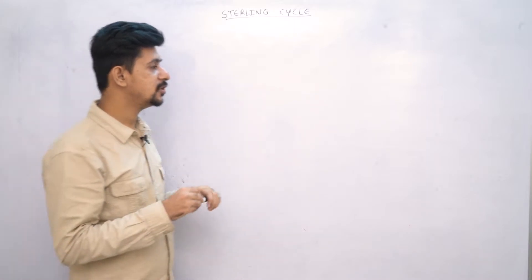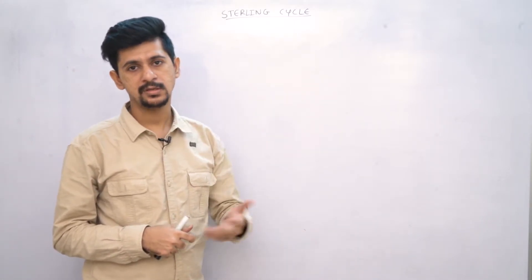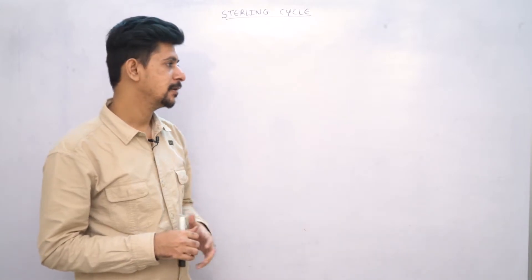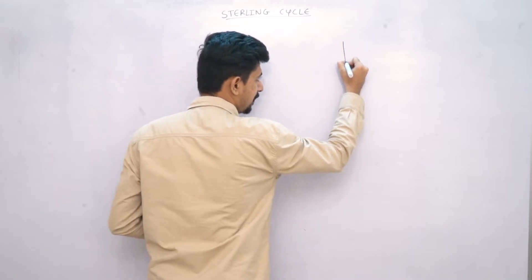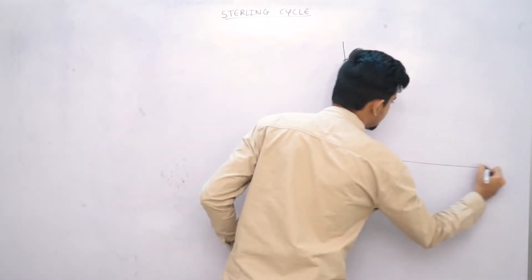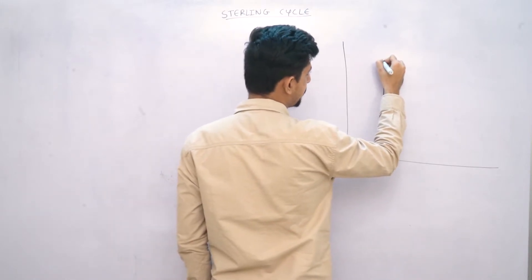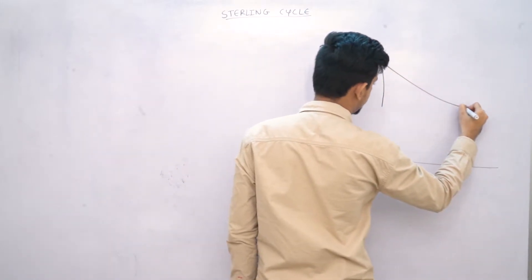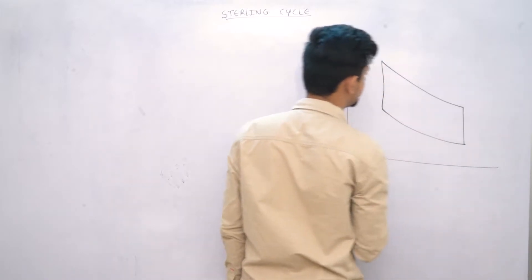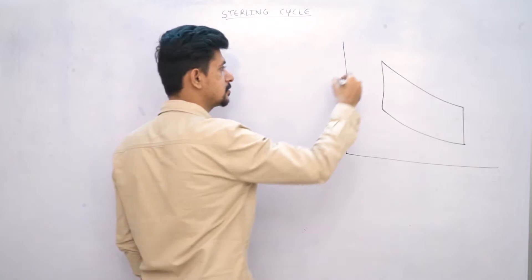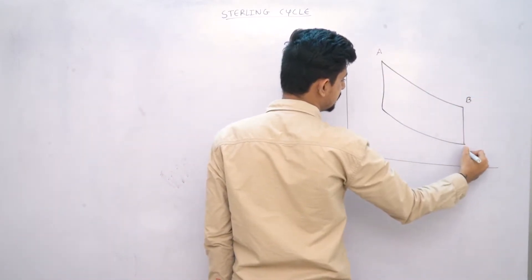So this is how a Sterling cycle will work, and it will look like something like this. Let me name these different paths A, B, C, and D.